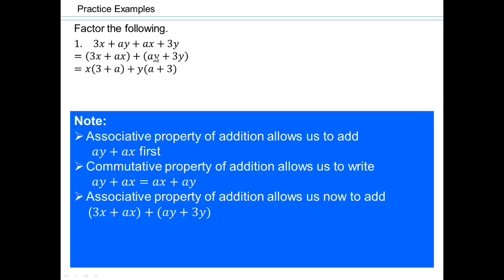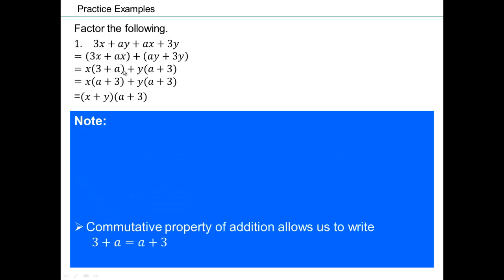Similarly here, y is the greatest common factor, which I can pull out. So y times a is ay, and y times 3 is 3y. Now if you look over here, 3 plus a is the same as what? a plus 3, good. And the reason is because of commutative property of addition.